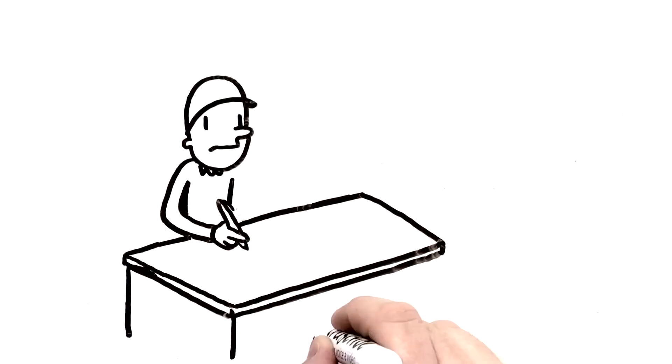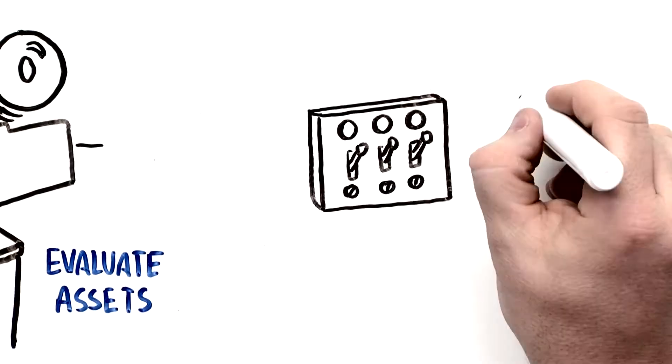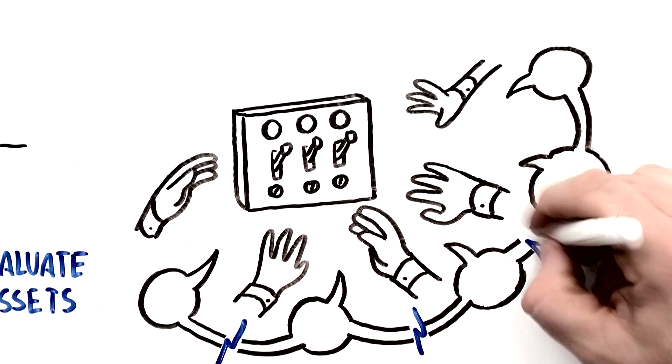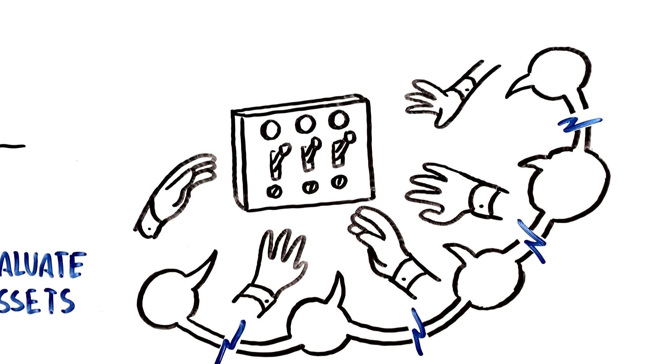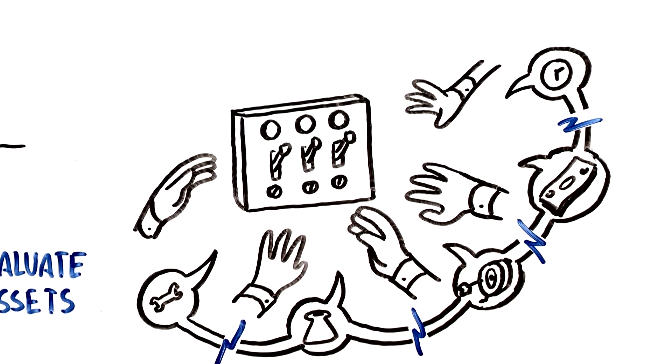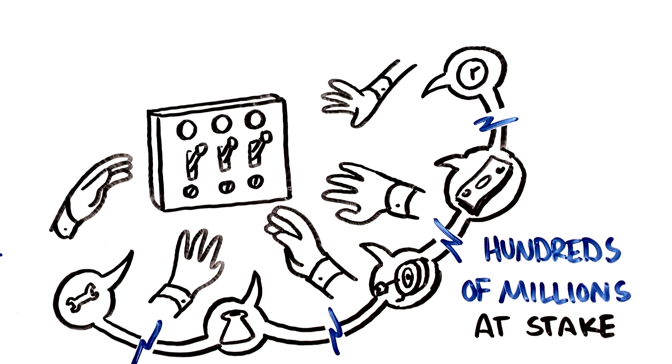Operators are often left on their own to evaluate and assess multiple data sources. Many variables and people are involved in this process with very little communication between them. As a result, the components to driving margin improvement do not always come together. This can have major consequences with potentially hundreds of millions of dollars at stake.